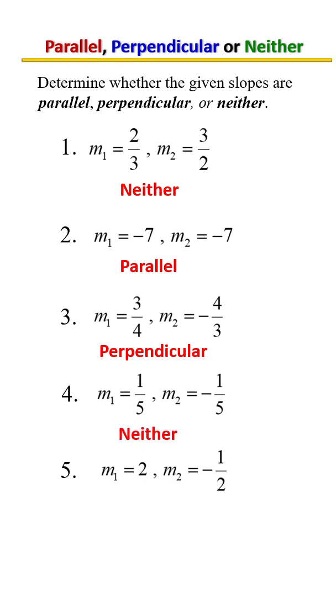Lastly, these two slopes, what would you say they are? Yes, perpendicular. Opposite signs and one of them is flipped, so we call that negative reciprocals.